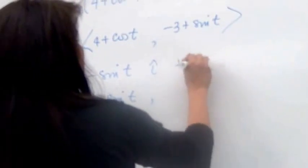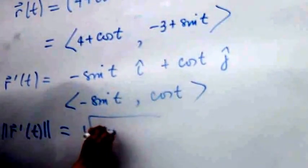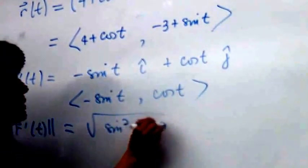What about the second component? It's going to be plus cosine t j. So that's your R prime of t. Now we need the magnitude of R prime of t. The magnitude of R prime of t is the square root of sine squared t plus cosine squared t, which equals one.